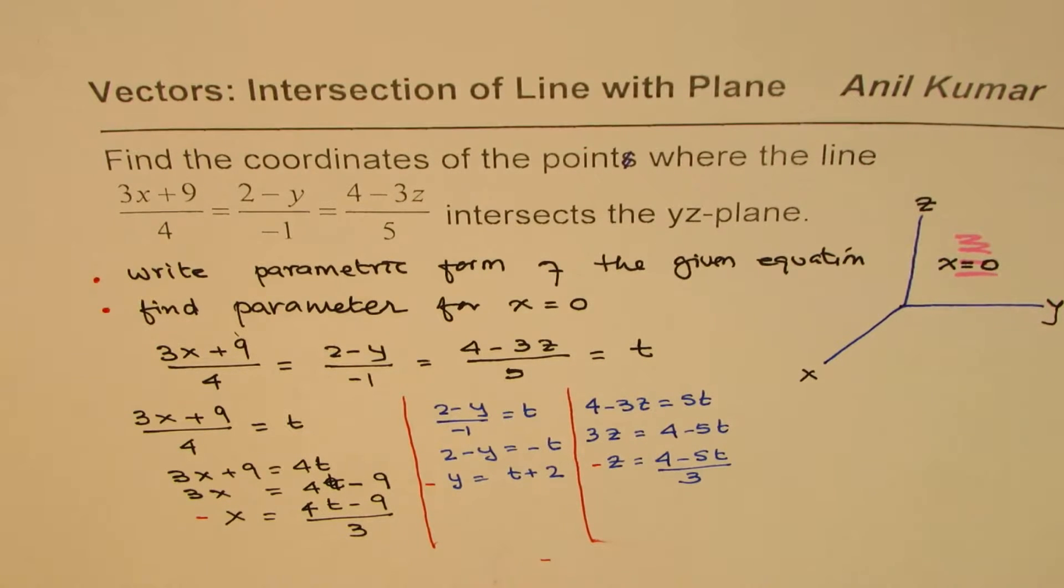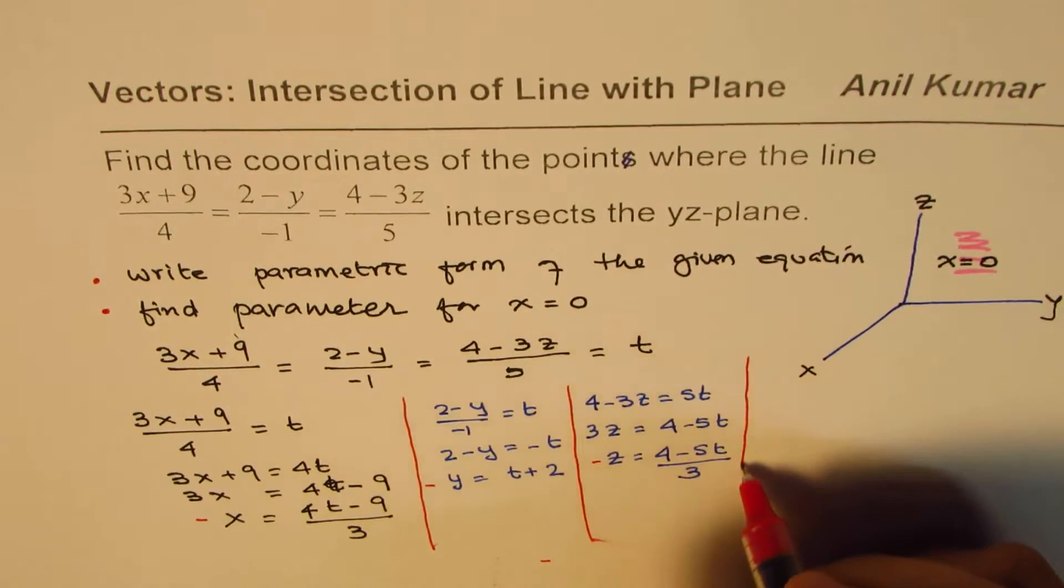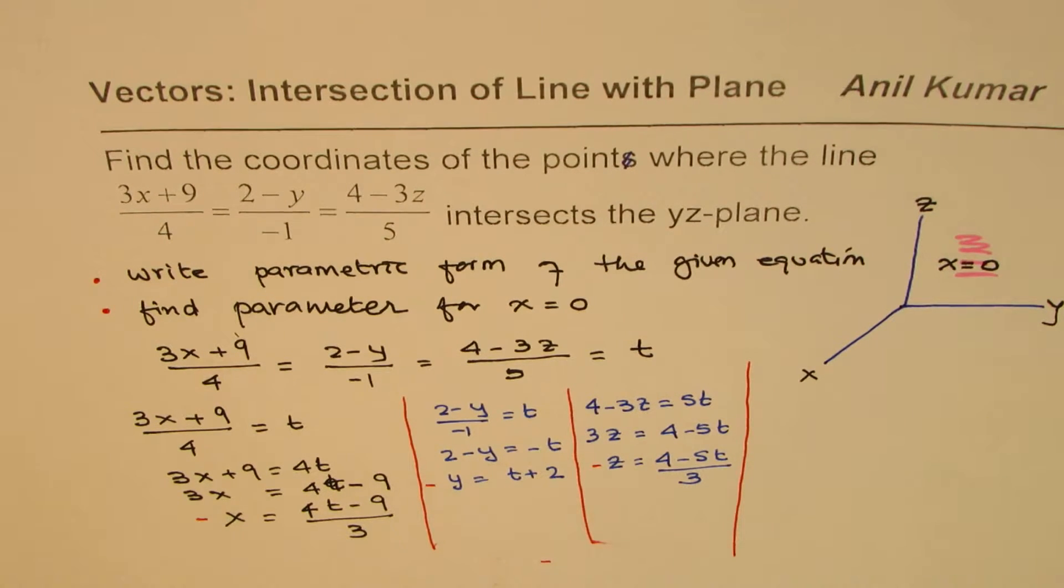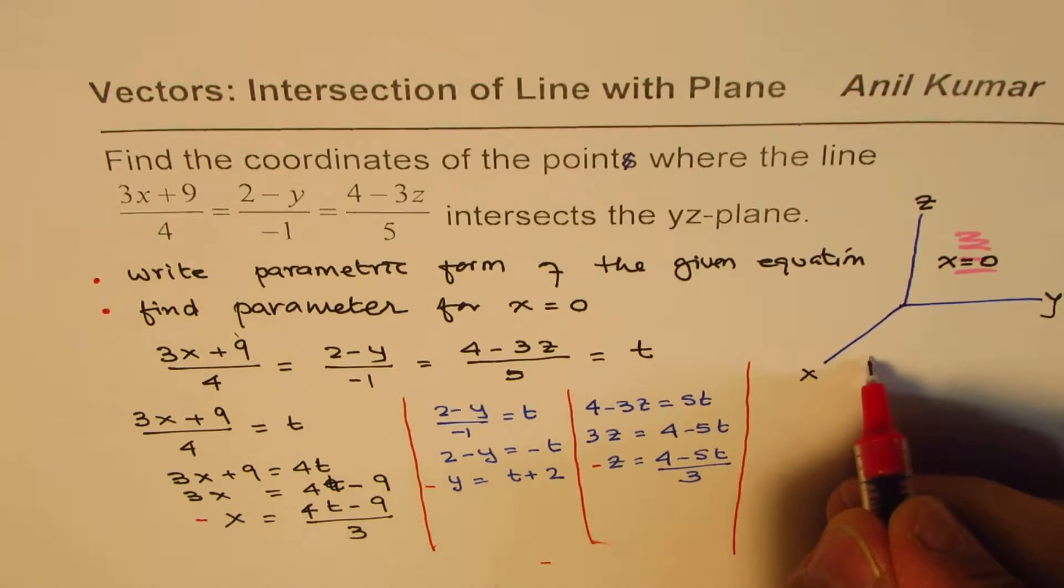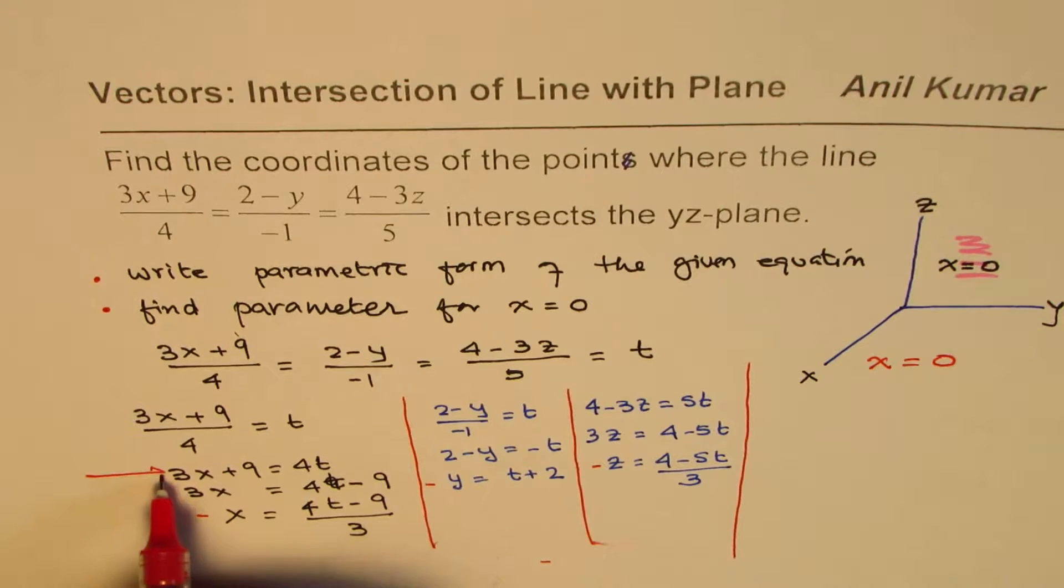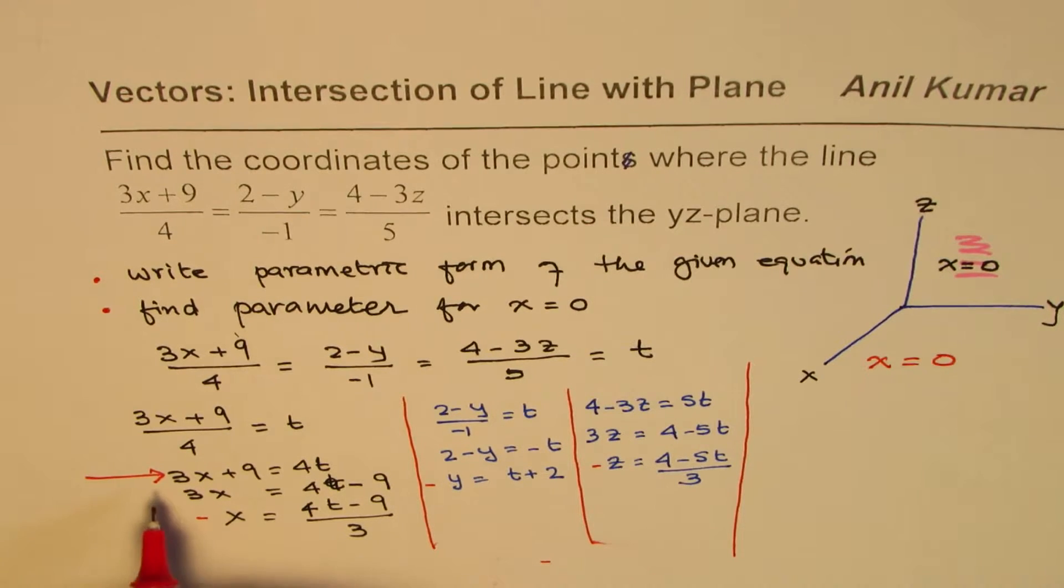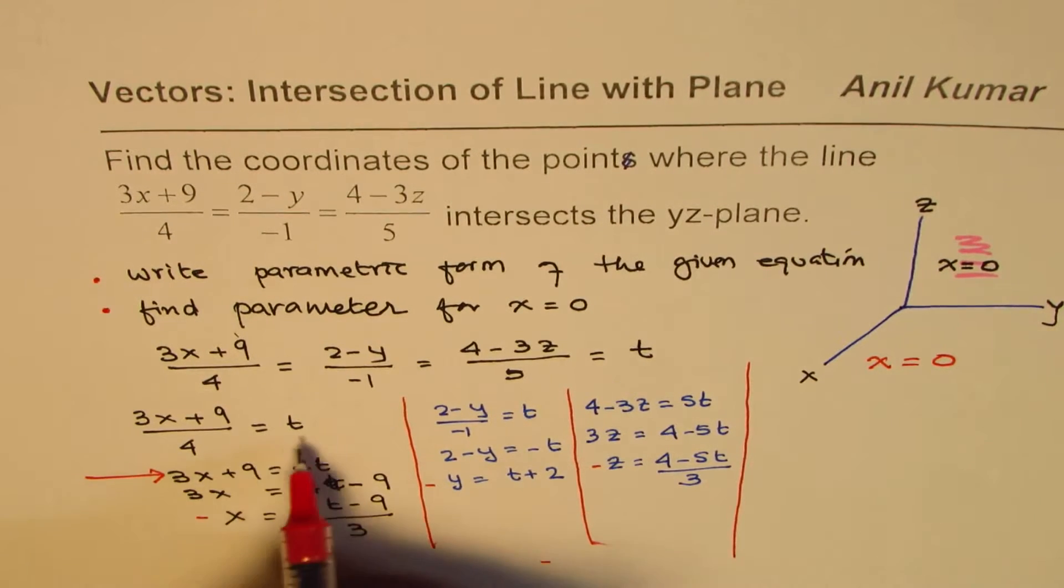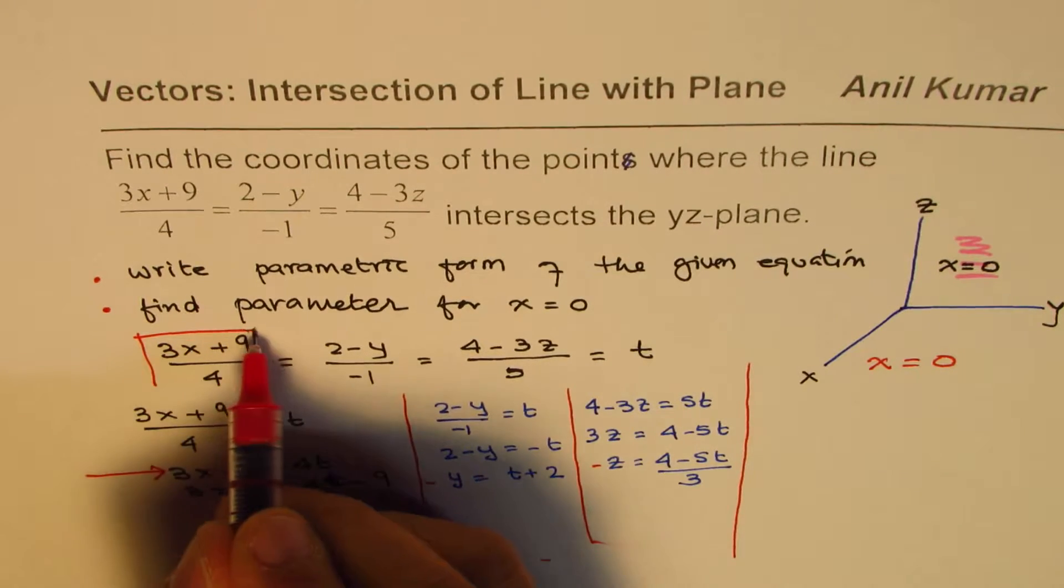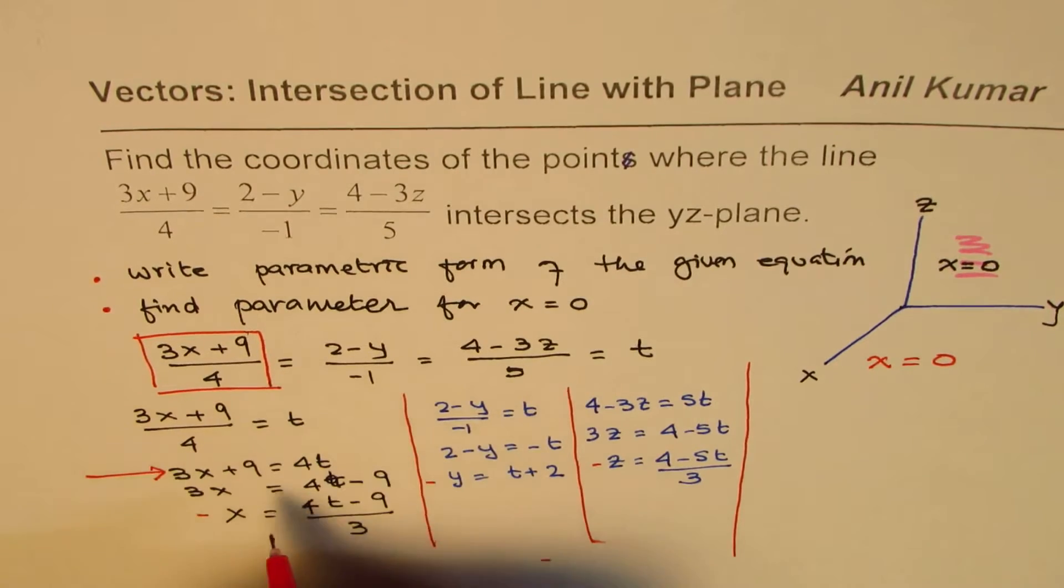Now what do we need? We need to make x zero. If x is zero, what is t? That's the whole idea. Let's get back and calculate y and z. The idea here is to make x equals to zero. We could have used this equation also. Actually we'll use the original equation itself. You might do a calculation mistake here, so that is very safe to use.